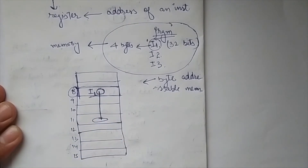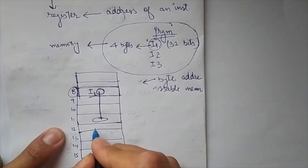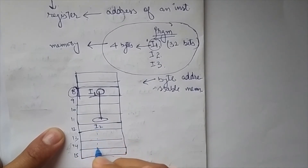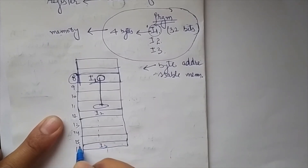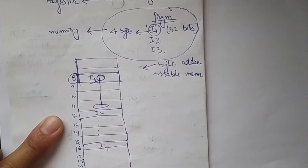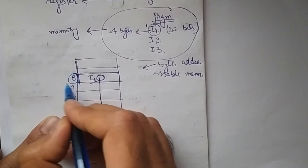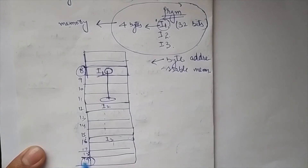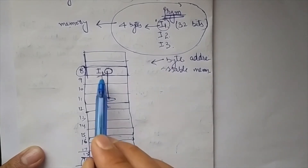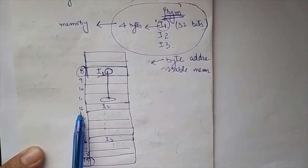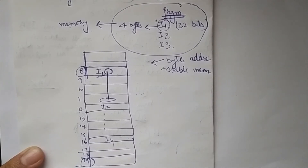I1 will occupy 4 bytes starting from address 8 through address 11. Then at address 12 we store I2, occupying addresses 12, 13, 14, and 15. Then from address 16 we store I3, occupying addresses 16, 17, 18, and 19. So from address 8 to address 19 is our program with instructions I1, I2, and I3.